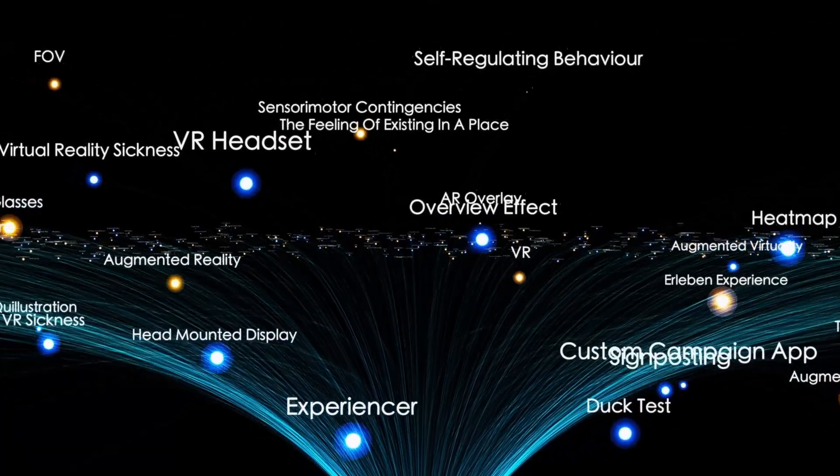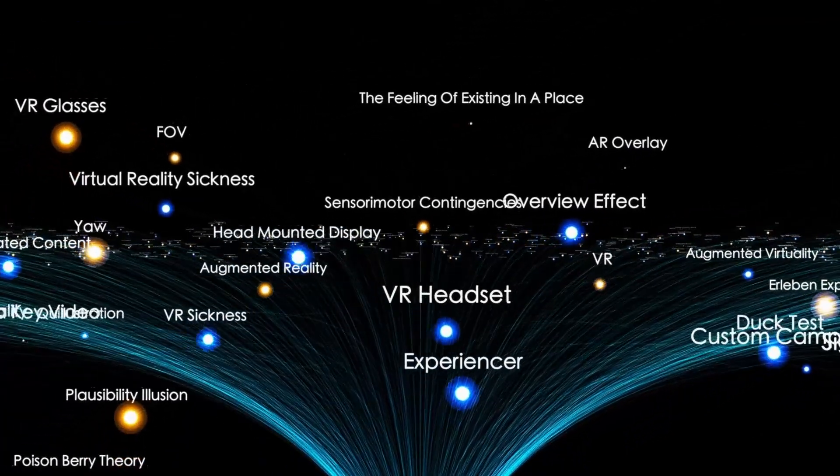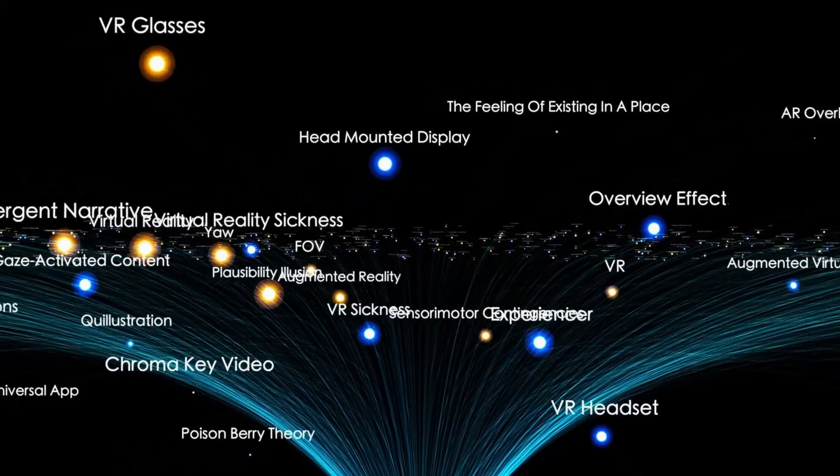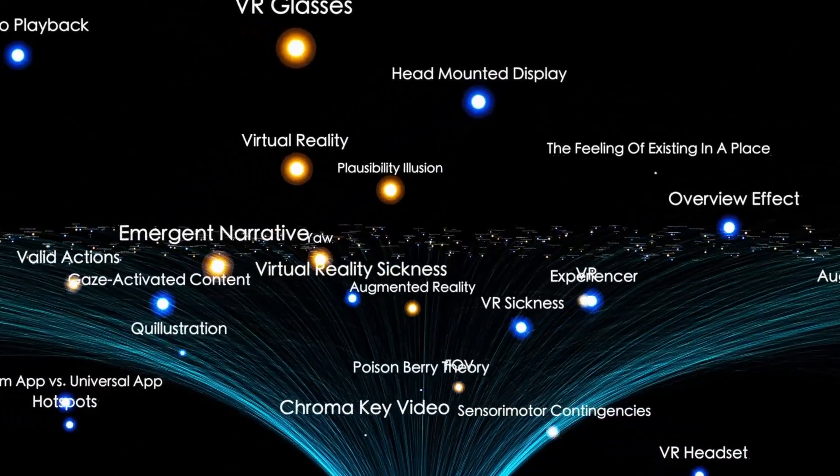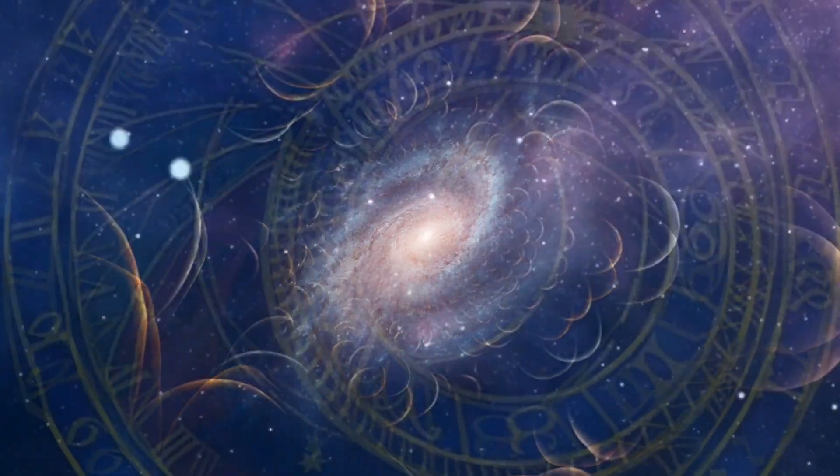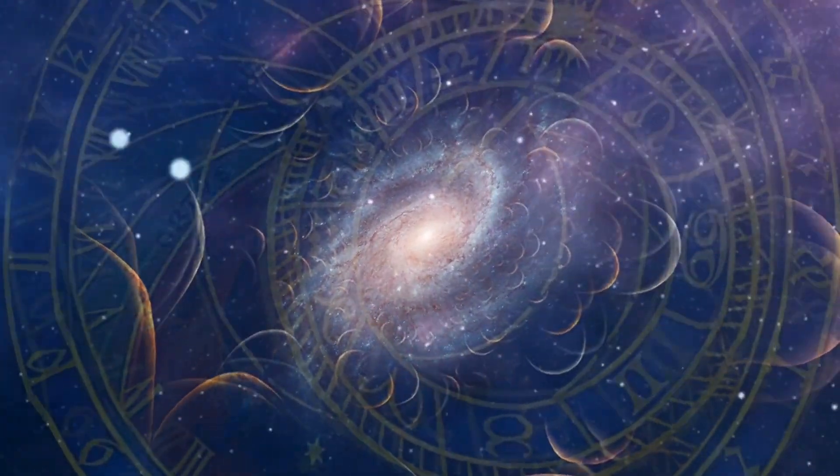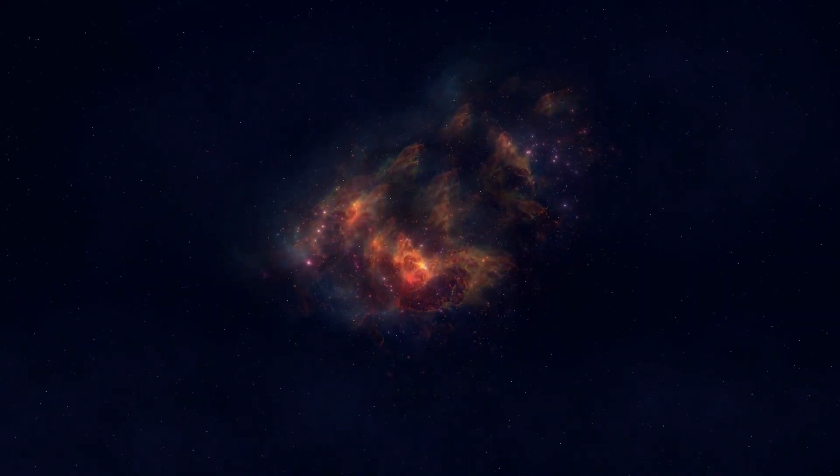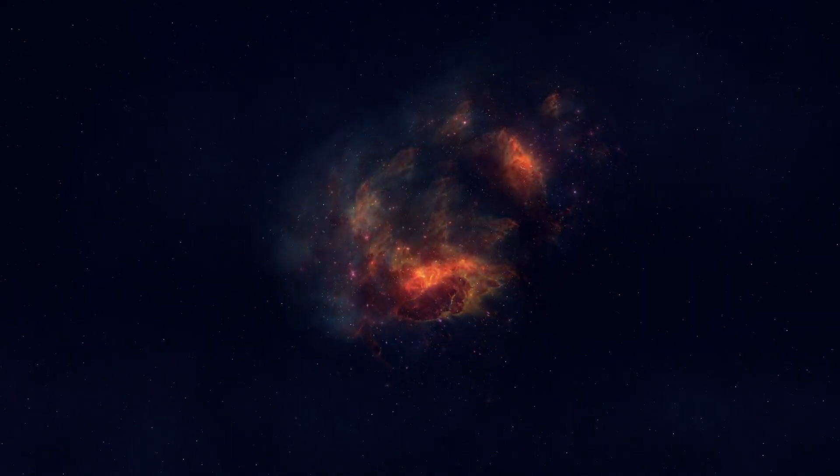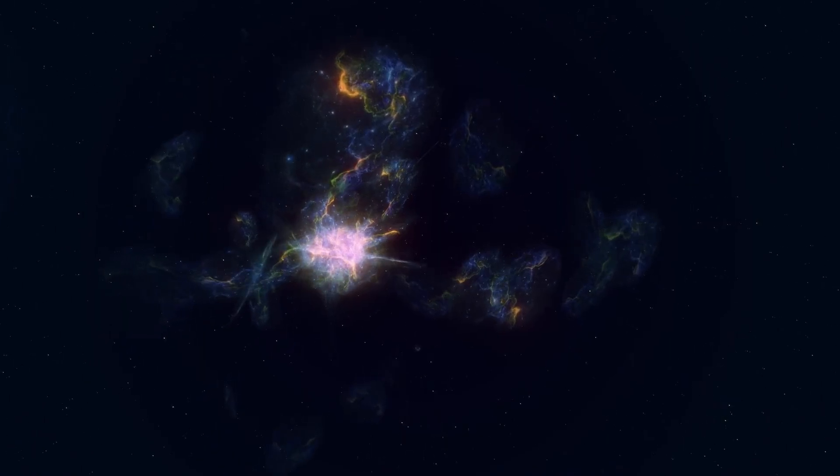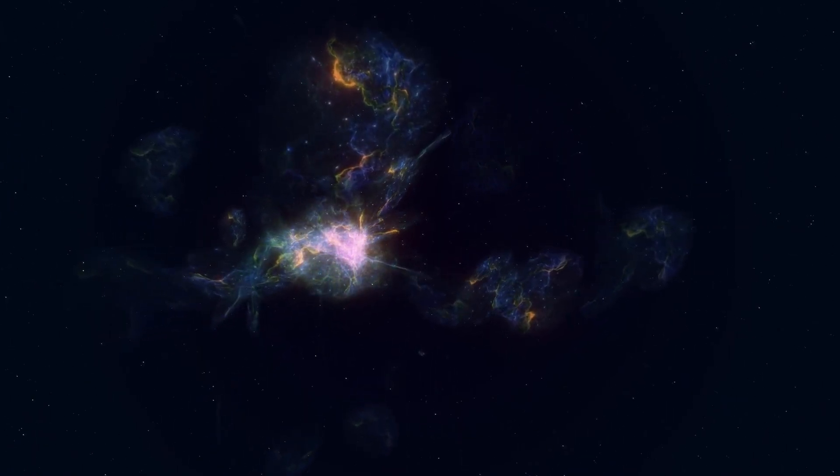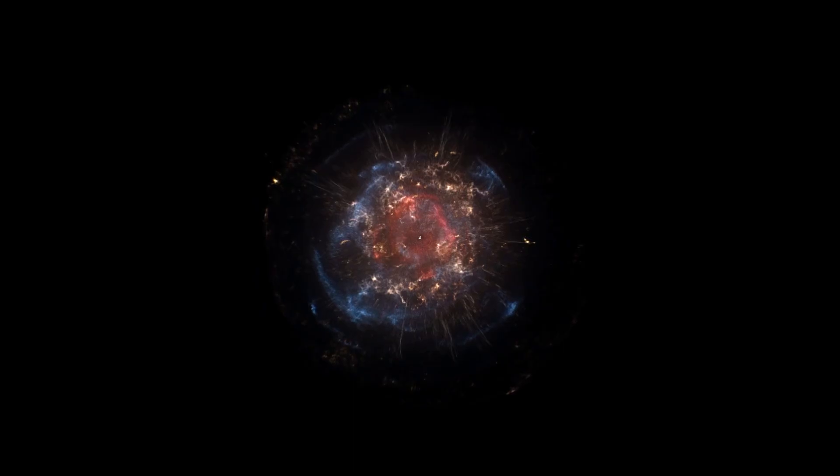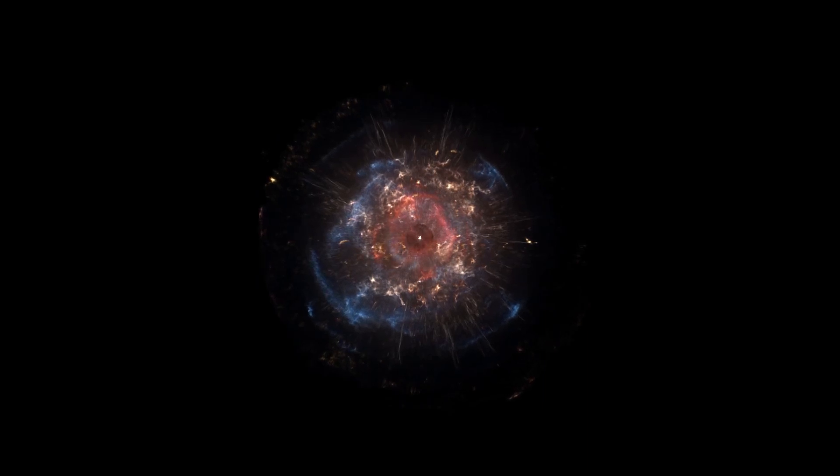Betelgeuse's distinctive reddish hue further emphasizes its uniqueness. This coloration arises from its relatively low surface temperature of about 3,500 Kelvin, much cooler than the sun's 5,500 Kelvin. Despite its immense size, Betelgeuse emits less energy per unit of surface area than our sun, though it still radiates far more total energy due to its massive volume.